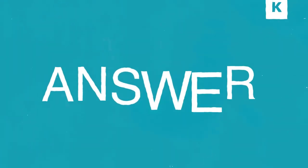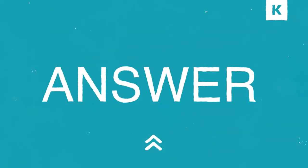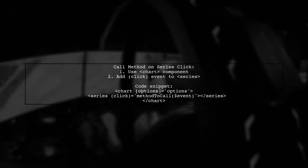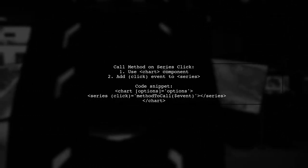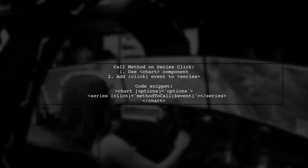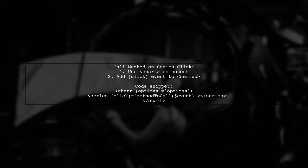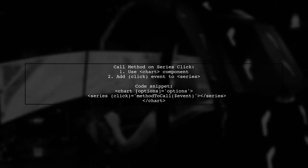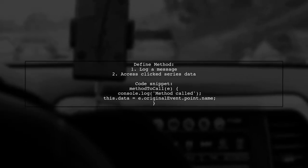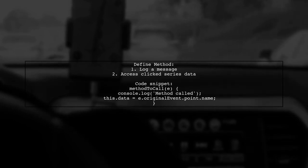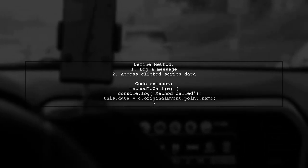Let's now look at a user-suggested answer. To call an Angular component method when clicking on a High Chart series, you can use the Angular2 High Chart package. It allows access to series events. In your component, define the method that will be called. This method can log a message and access the clicked series data.